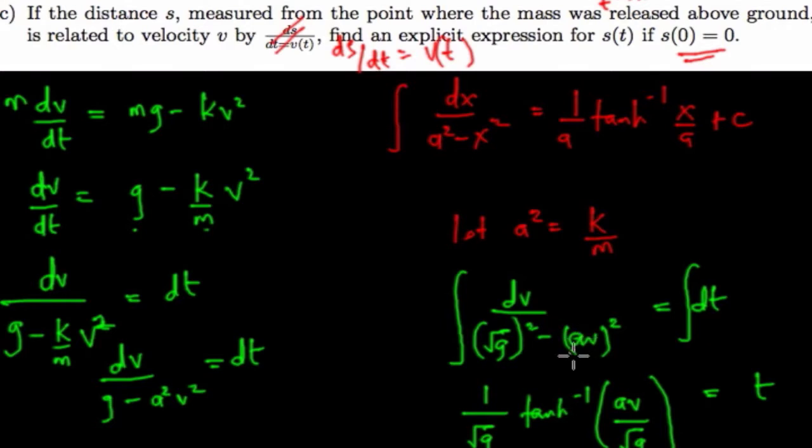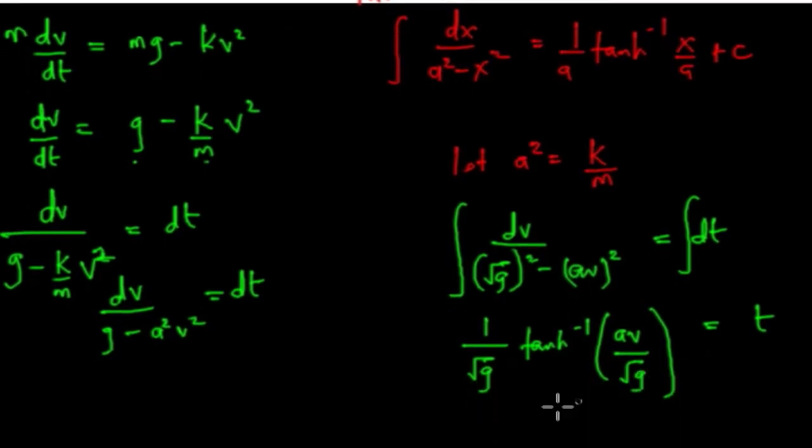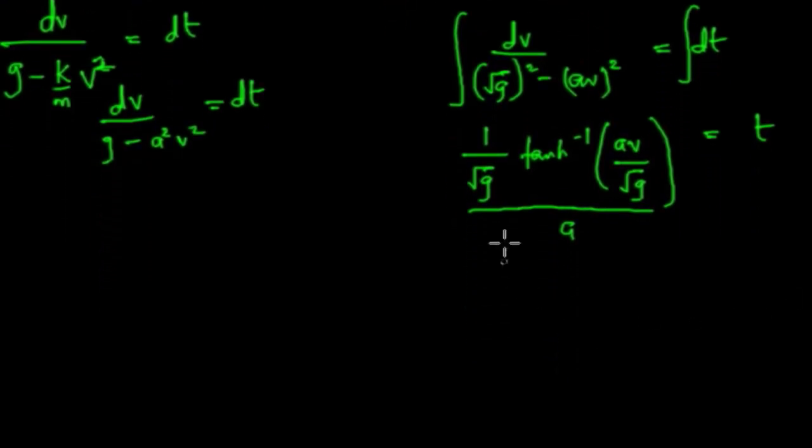But then we observe that there is an a here, it's not just only v that is here. So we still need to divide this by the differentiation of what we have here, which is a. And then when we simplify that further,